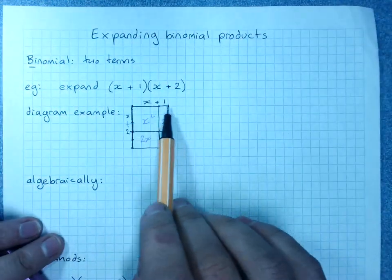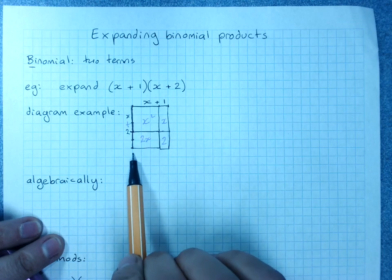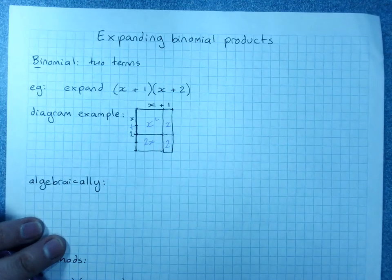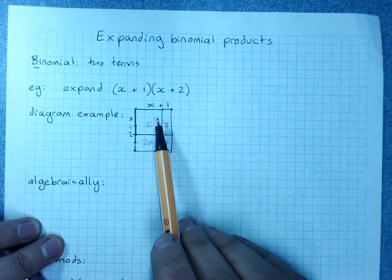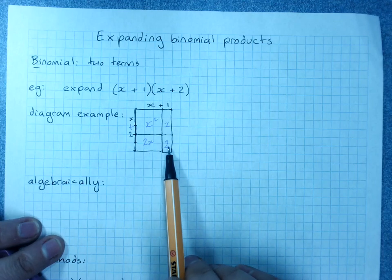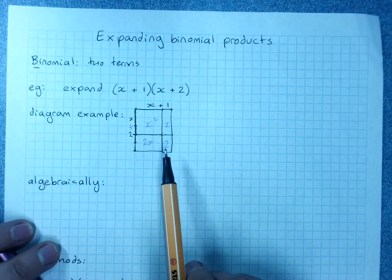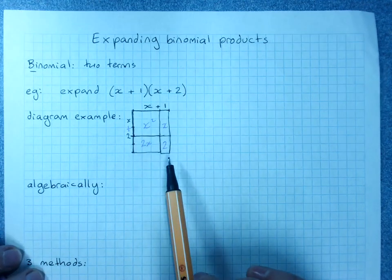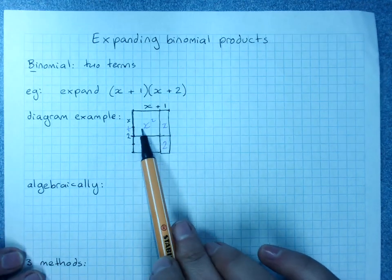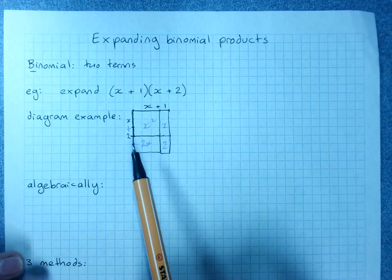And x plus 2, lots of x plus 1, that way, gives us x squared plus x plus 2x plus 2. So looking at it in a diagram can be quite useful if you're not sure what's happening.